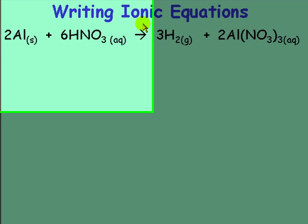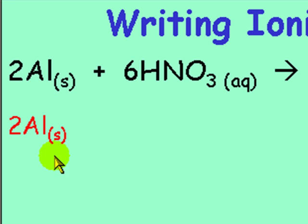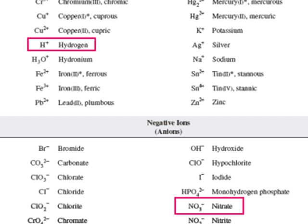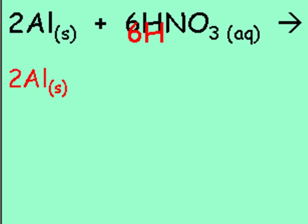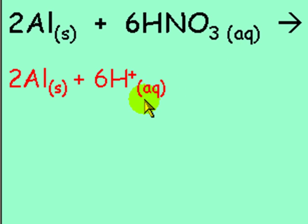To write an ionic equation, we start by bringing down the aluminum. Since aluminum is a solid, we don't change it. HNO₃ is aqueous, so we must dissociate it into ions. We go to the ion table and find the ions H⁺ and NO₃⁻. We bring down H⁺ with a plus sign, and since HNO₃ is aqueous, both ions are aqueous — so we put aqueous by the H⁺.